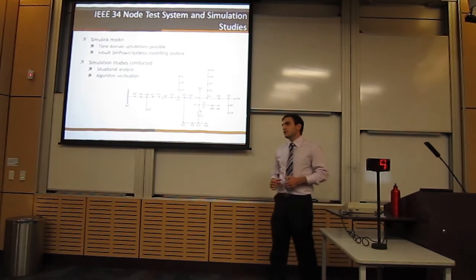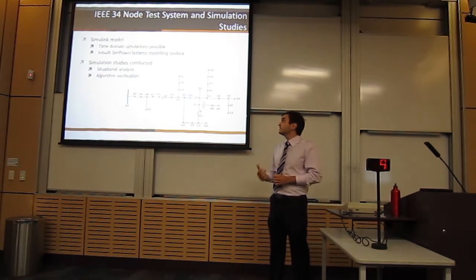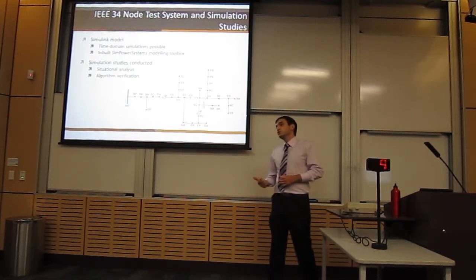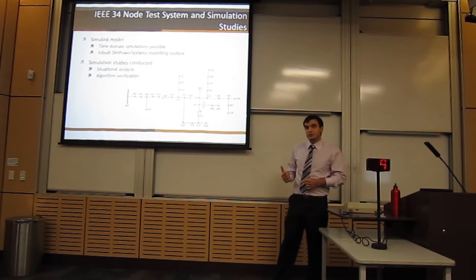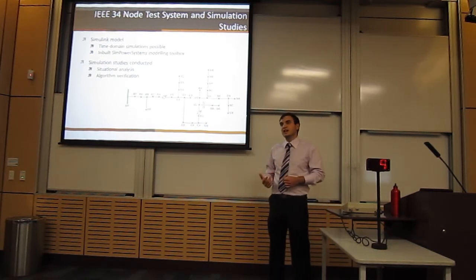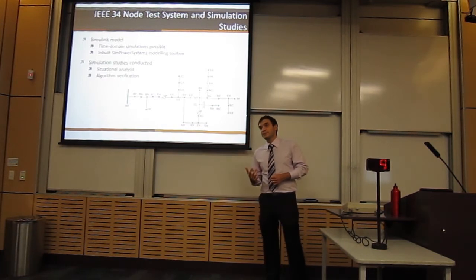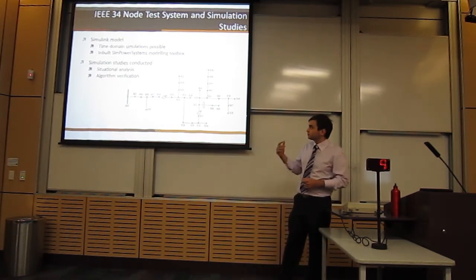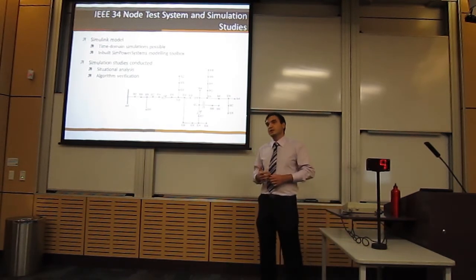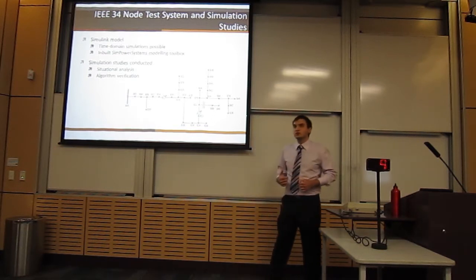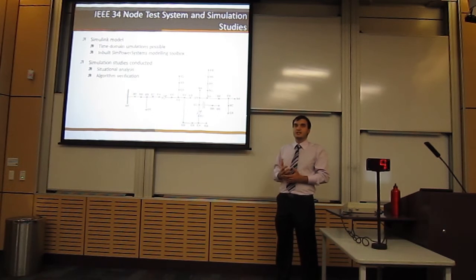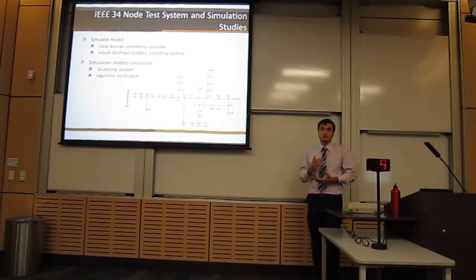To conduct this thesis, I used the IEEE 34 node test system, as it has an online substation, an on-load tap-changing substation transformer, two step voltage regulators, and two static capacitor banks. The step voltage regulators are crucial in observing the effect that DG has on minimizing voltage regulator tap operations. A model was created in Simulink using the inbuilt SimPower Systems Toolbox. This was first done to provide a situational analysis of how DG can affect tap operations, and also used as a base case to compare algorithm results against to ensure their accuracy.